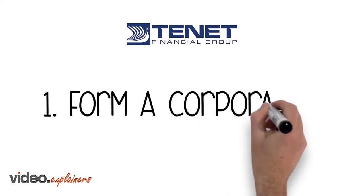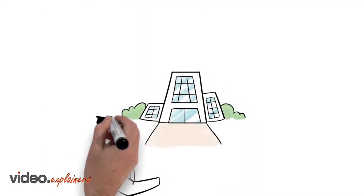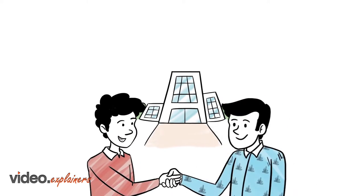Step 1: Form a corporation. Tenant Financial Group will work with Jack to form a new corporation. This is a requirement for 401k rollovers.